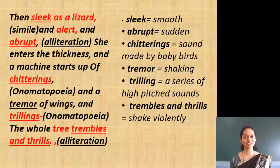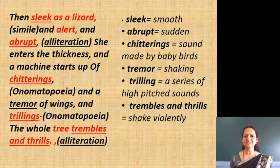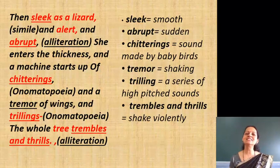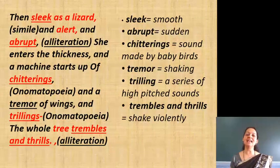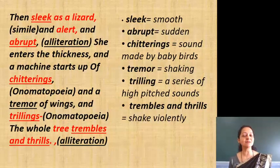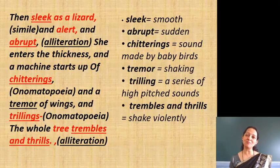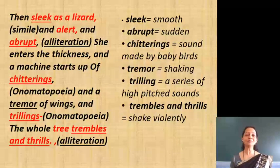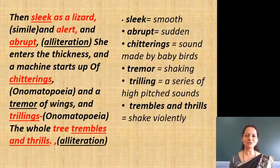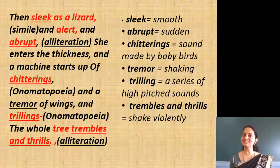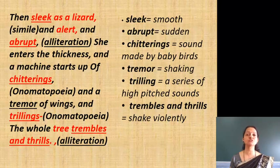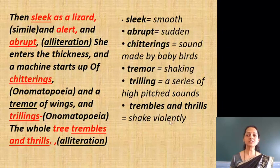'A tremor of wings and trillings' — tremor means shaking of wings, and trillings is a series of high-pitched sounds made by the small chicks to attract their mother, as if saying 'come and feed us, we are hungry.' Trillings is onomatopoeia. 'The whole tree trembles and thrills' — here 'trembles and thrills' is alliteration used for more effect. Trembles and thrills means shakes violently.